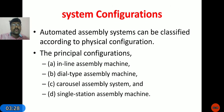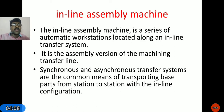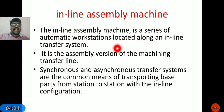Coming to system configurations: automated assembly systems can be classified according to their physical configuration based on the floor space, size, and type of product. The configurations are: inline assembly machine, carousel assembly system, and single station assembly machine. In the inline assembly machine, it is a series of automatic workstations located along an inline transfer system.